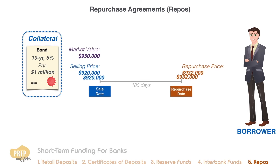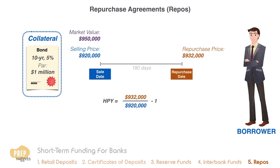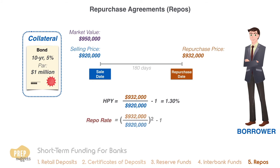The holding period yield for the 180-day loan period is 1.3%. The repo rate would be expressed as the equivalent annual rate, which is 2.63%.